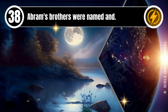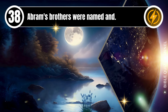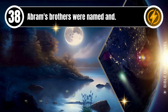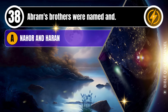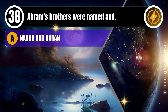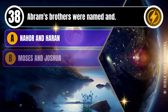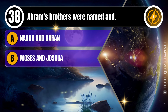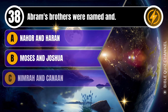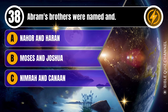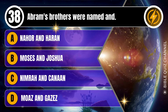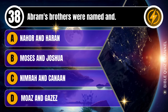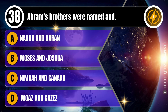Question 38. Abram's brothers were named: A. Nahor and Haran. B. Moses and Joshua. C. Nimrah and Canaan. D. Moaz and Gazez. You get 10 seconds.